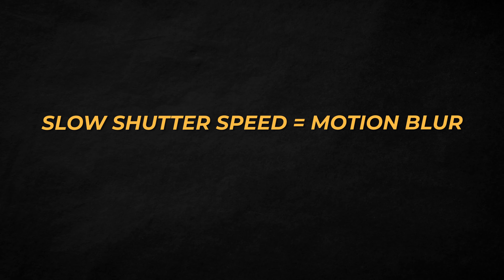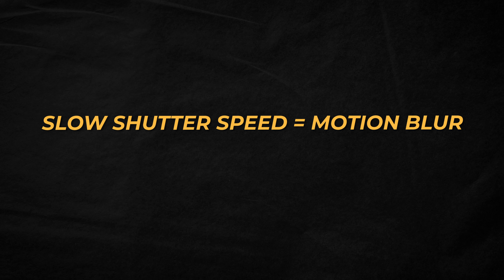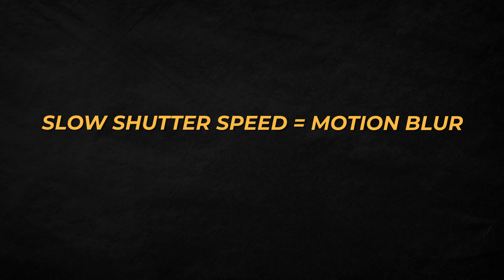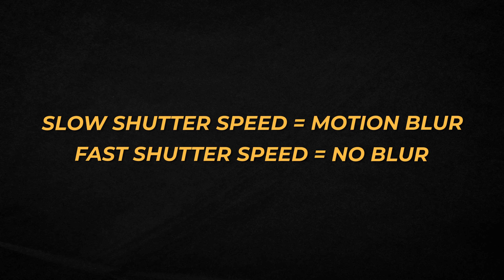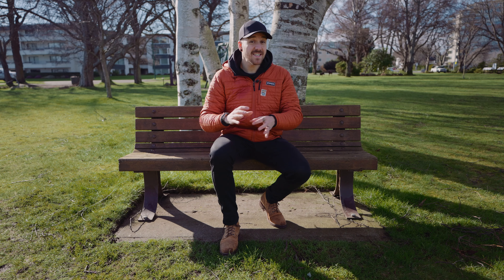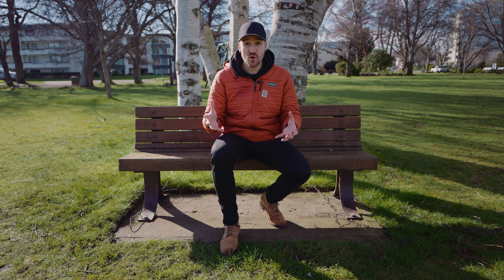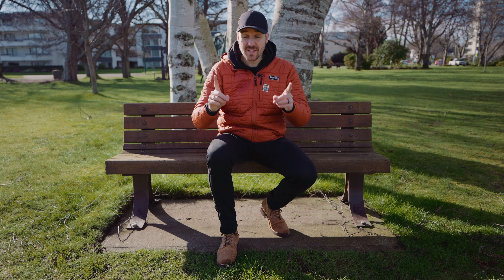If we have a slow shutter speed, anything moving in the frame is going to be blurred to some extent. If we have a super fast shutter speed, we're going to freeze all of that motion in each frame. Your natural instinct may be to crank up your shutter speed super fast and make sure everything is frozen — but if you freeze all of the motion and get rid of every little ounce of motion blur, that can start to look really weird.